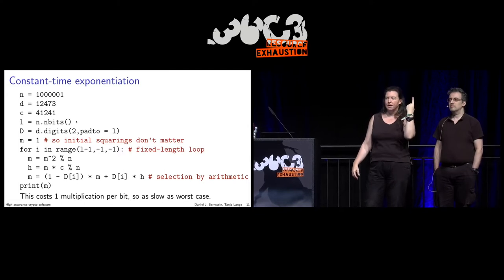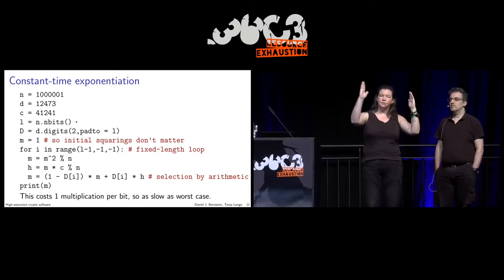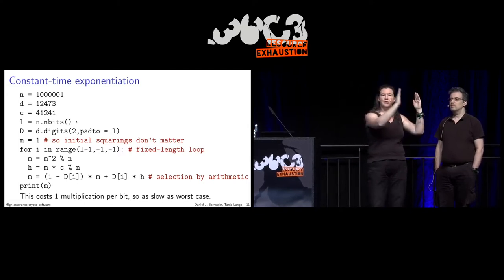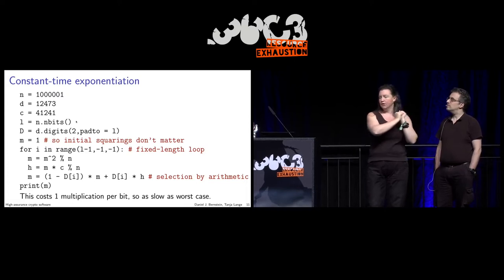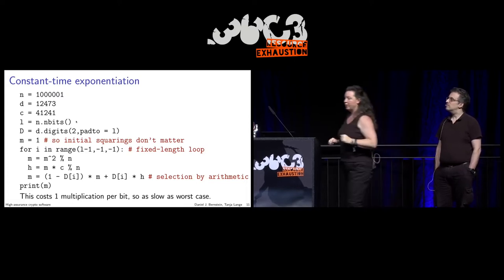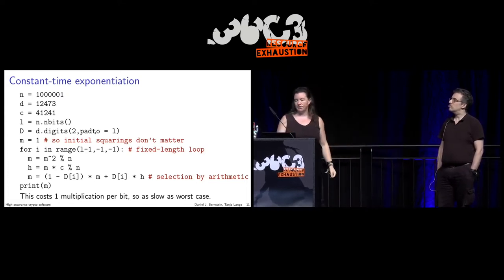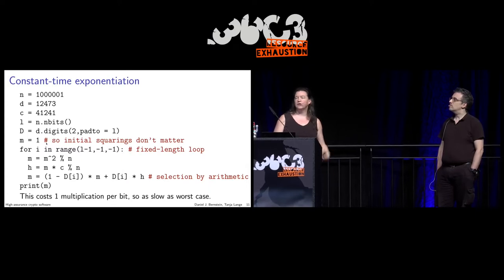We initialize to 1. If you square 1, it remains 1. And you do the same for other bits in D. We can add padding up to the fixed length. We can make the loop have a constant length.